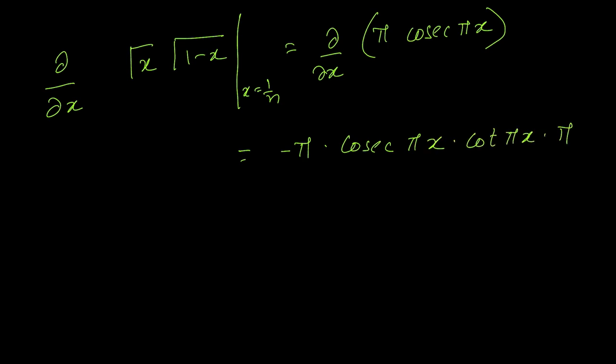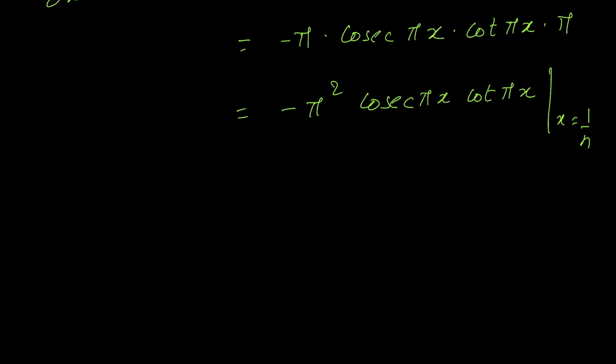And if I do that, I will end up getting minus π cosec π x into cot π x into π, of course using the chain rule of differentiation. So this result becomes minus π square cosec π x into cot π x. Now I need to perform this differentiation when x is 1 by n, so let us put that. That will make our result minus π square cosec π by n cot π by n.